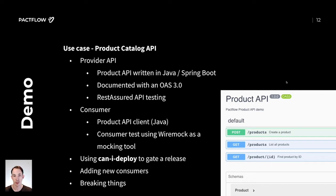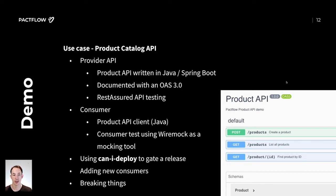The provider API is going to be written in Java and Spring Boot, and we're going to use RestAssured, the API testing tool, to make sure that the code is compatible with that spec. On the consumer side, we're going to have a Java product API client, and we're going to use WireMock as a mocking tool to test this client.